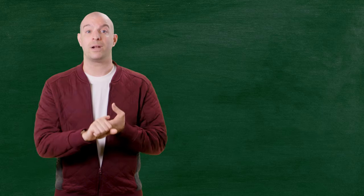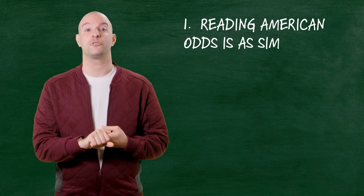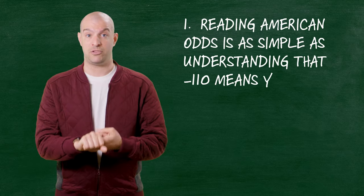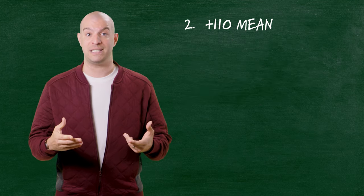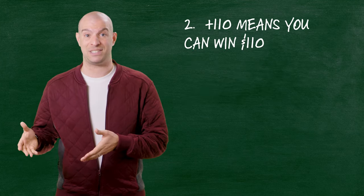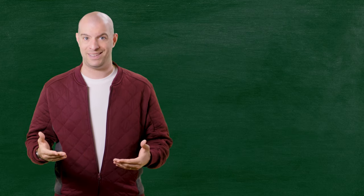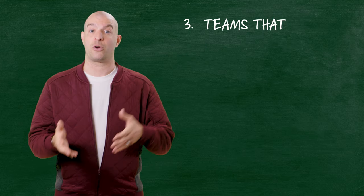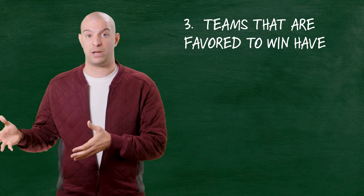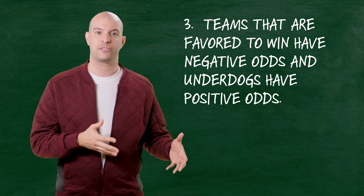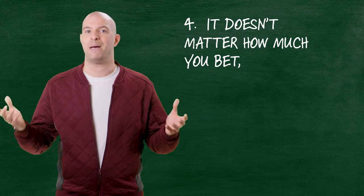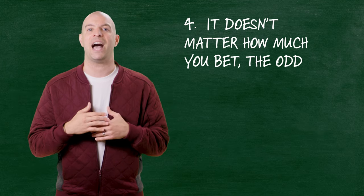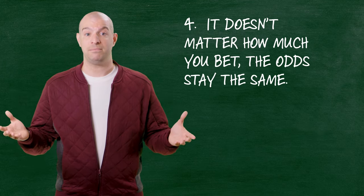Quick recap before we move on to part two. American odds are as simple as understanding that minus 110 means you have to risk $110 to win $100. Plus 110 means you would win $110 on a $100 bet. Teams that are favored have a negative number next to them. Teams that are underdogs have positive odds. And it doesn't matter how much you bet — the odds stay the same. Easy, right?